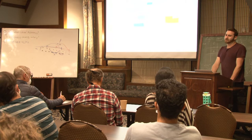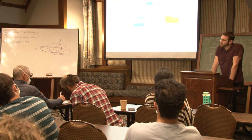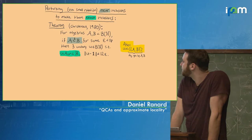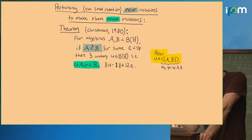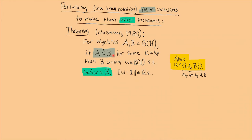The main tool I want to tell you about is a method for taking a near inclusion and perturbing it to make it an exact inclusion. This is a theorem from Eric Christensen. Given two algebras A and B and a near inclusion, the result is that there is some unitary such that you can rotate A into B. That unitary will be a small rotation controlled by the size of that near inclusion. Moreover, the unitary will be generated by the algebras A and B, which will be useful.